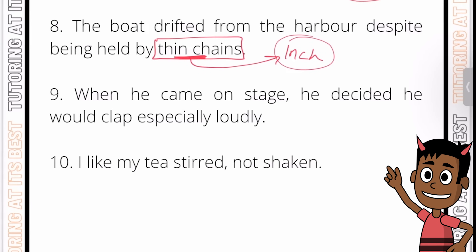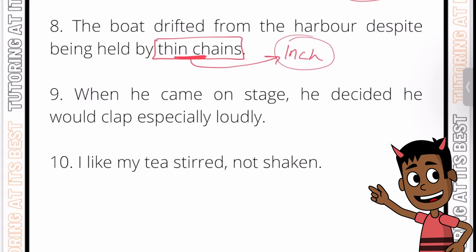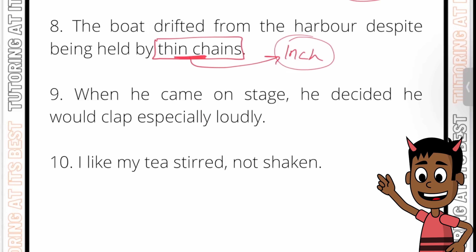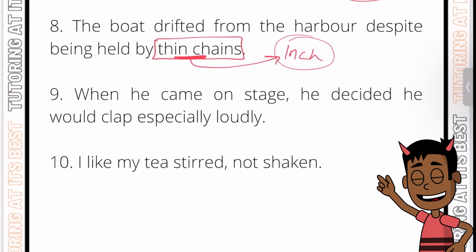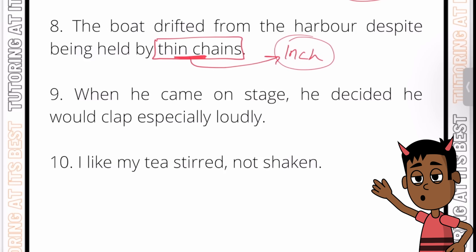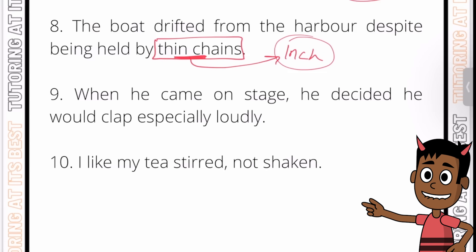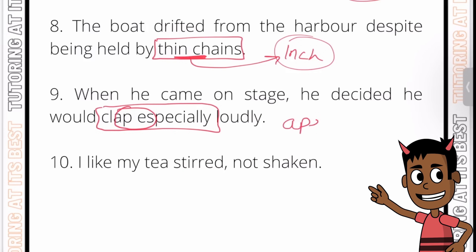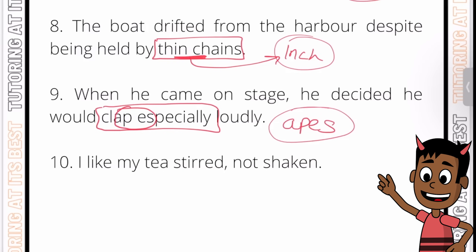Let's do Questions 9 and 10 together as our final questions. Question 9: 'When he came on stage he decided he would clap especially loudly.' Where do you think the four-letter hidden word lies? Here's a clue — it's an animal. The answer is 'clap' and 'especially,' because 'apes' — A-P-E-S — is hidden between them.